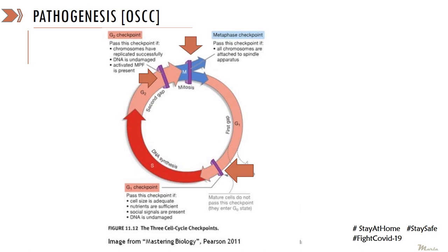Just before the beginning of mitosis, a third checkpoint is in place to control which cells undergo cell division. Under normal circumstances, various checkpoints have been kept in place to ensure that the cell which undergoes cell division is normal and does not show any dysplastic features. In oral squamous cell carcinoma, this cell cycle is disturbed or dysregulated — meaning the checkpoints controlling normal proliferation are disrupted.